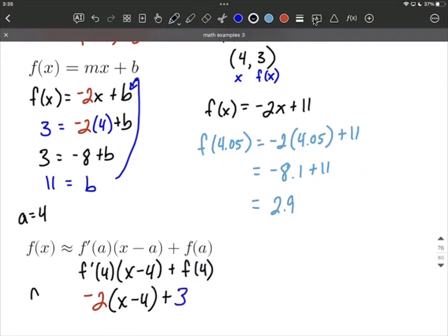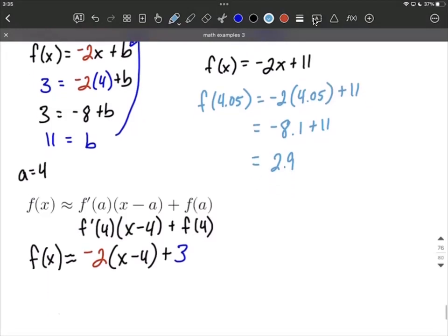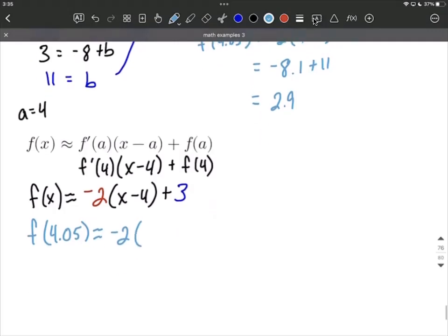This gives us, again, a formula that came out really nice and quick as far as getting there. As long as you have it written down, it's not bad. So let's use it again to estimate that f of 4.05. In this case, it's going to be negative 2 multiplied by 4.05 minus 4 plus 3.